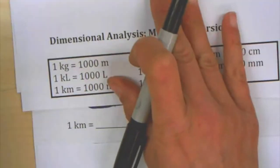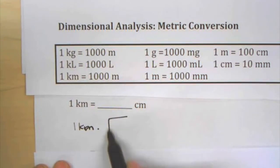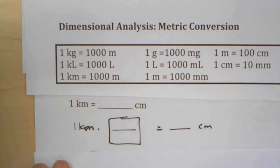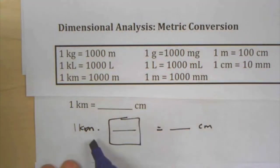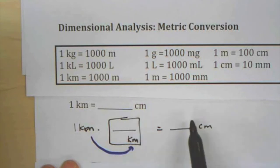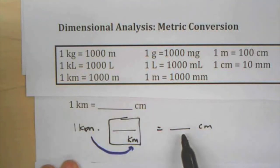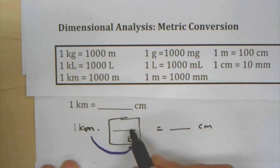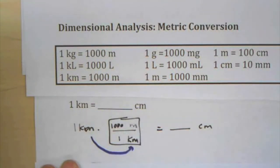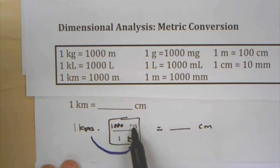Last problem: 1 kilometer converted to centimeters, multiplying by a unit giant one. I set it up with kilometers as the starting units, trying to introduce centimeters. But looking at the reference, kilometers only relate directly to meters, so I can't go directly from kilometers to centimeters — I need an extra step. First: kilometers to meters, where 1 kilometer equals 1,000 meters. The kilometers cancel out.